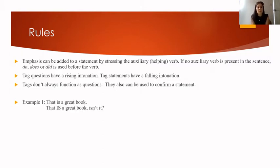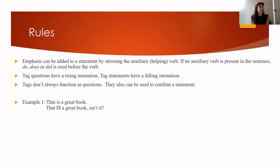Example number one. 'Man, this is a great book.' Response: 'That is a great book, isn't it?' So 'is' is your helping verb, your auxiliary verb. 'That is a great book, isn't it?' You have a tag question structure, but it's functioning as a tag statement.